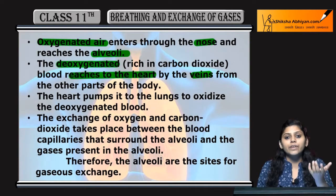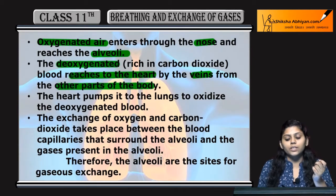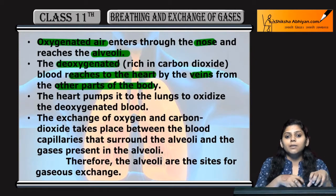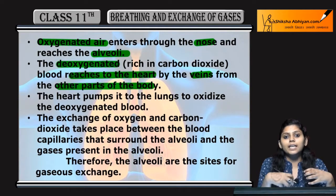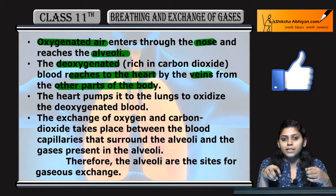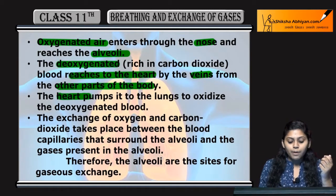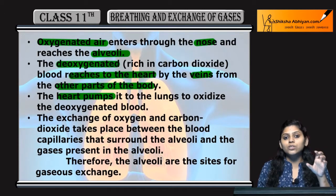Veins carry deoxygenated blood to the heart from other parts of the body. From all the regions of the body other than the heart, veins carry deoxygenated blood to the heart. The heart then pumps that deoxygenated blood to the lungs.